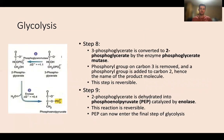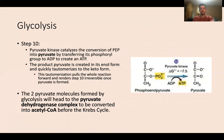In step eight, 3-phosphoglycerate is converted into 2-phosphoglycerate by phosphoglycerate mutase — the phosphoryl group on carbon 3 is removed and a phosphoryl group is added to carbon 2. This step is reversible; it's essentially an isomerization moving the phosphate from the 3-carbon to the 2-carbon. In step nine, 2-phosphoglycerate is dehydrated into phosphoenolpyruvate (PEP) by enolase, which is also a reversible reaction. PEP can now enter the final step of glycolysis.